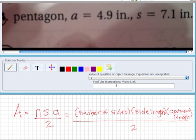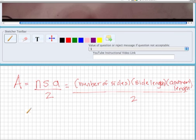So since they're giving us a and s, it's pretty easy to do. We know it's a pentagon, so n is going to be five. So let's go ahead and fill that in.